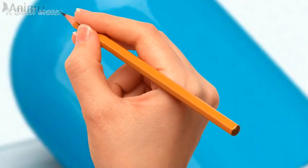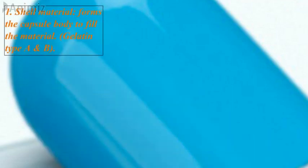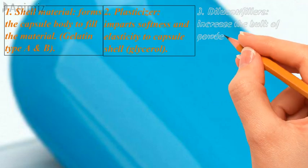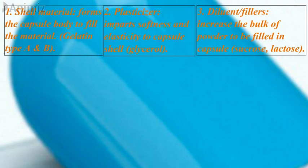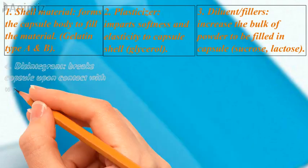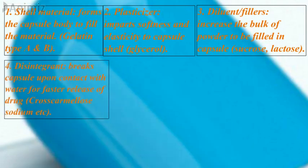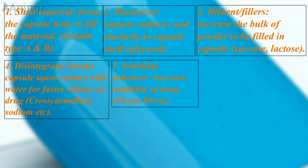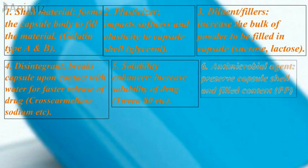Next is the capsule dosage form. The shell material forms the capsule body and is mostly gelatin type A and type B. A plasticizer imparts softness and elasticity to the capsule shell — example is glycerol. Diluents or fillers increase the bulk of the powder to be filled — examples are sucrose and lactose. Disintegrants break the capsule upon contact with water — example is croscarmellose sodium. Solubility enhancers increase the solubility of the drug. Antimicrobial agents preserve the capsule shell and filled content — example is propylparaben.